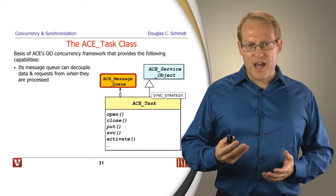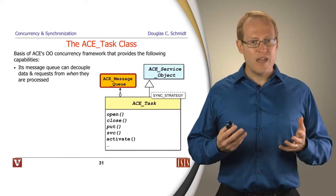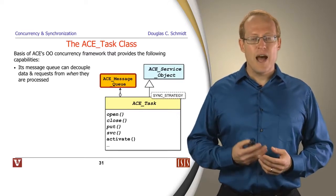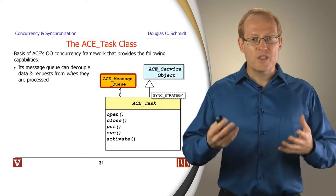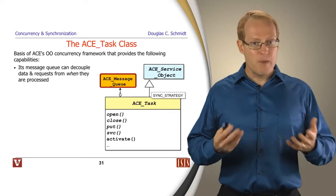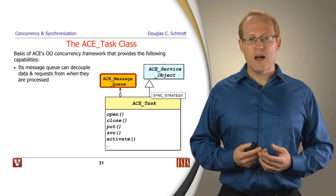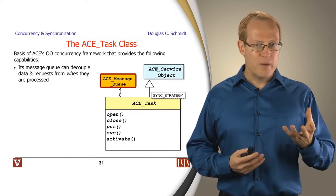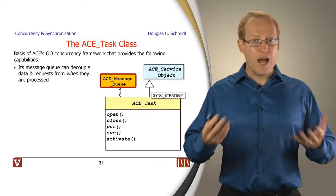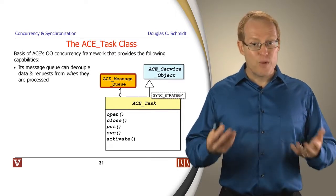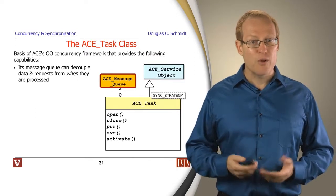So let's talk now about the ACE task class itself. We'll talk about the ACE message queue class later. The ACE task class brings together a number of different things. It has a message queue that can be used to decouple data and requests that come in from one thread, from the time when they're processed and the thread in which they're processed by some other thread or threads later.